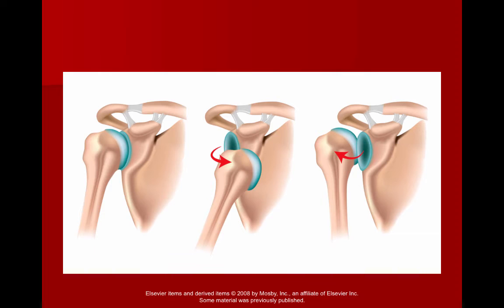Anterior hip dislocation happens if you fall from an elevated height and can occur in all ages. Posterior hip dislocation is more common from motor vehicle accidents in the general population. Shoulder dislocation is common; elbow dislocations are very common in little people. Wrist, finger, and hip dislocations happen often in the younger population due to football, rugby, and basketball. Knee dislocations can also happen with a lot of weight-bearing sports.